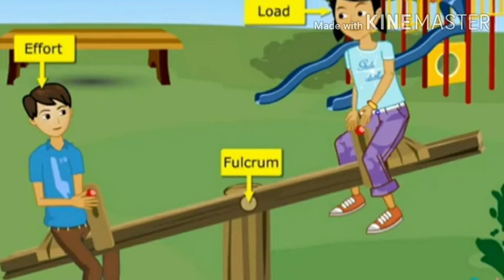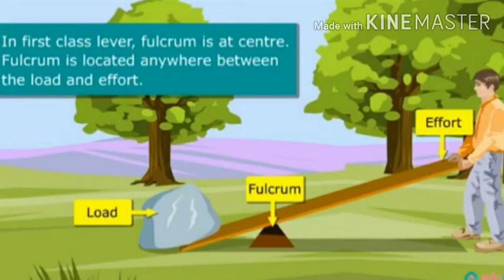We go to the seesaw. This is where the seesaw is going to be a fulcrum, in the center point. The effort is going to be a resistance and load. We go to the sea side and try to lift a rock. This is a fulcrum, this is a load — it is resistance and force. This is where we have a lever to do this.